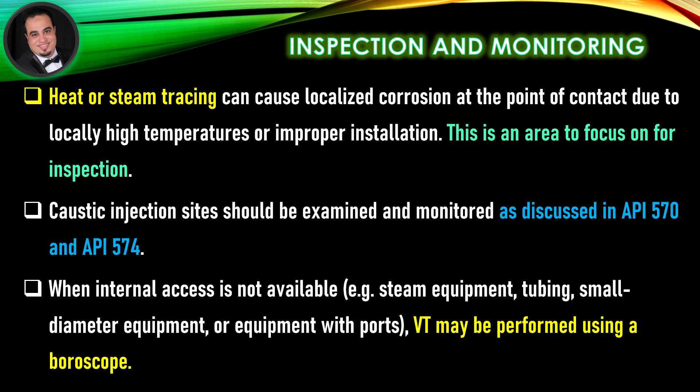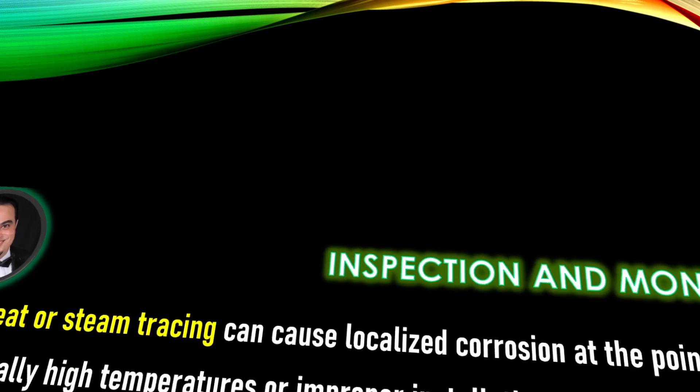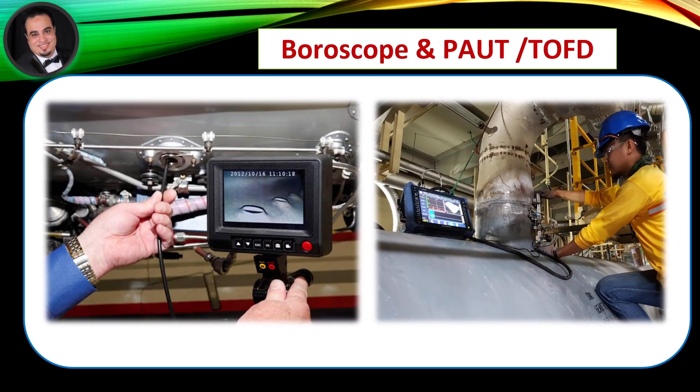Caustic injection sites should be examined and monitored as discussed in API 570 and API 574. When internal access is not available — for example, steam equipment, tubing, small diameter equipment, or equipment with ports — visual inspection (VT) may be performed using a boroscope. As illustrated in figures, examples of boroscope and PAUT/TOFD inspection are shown.